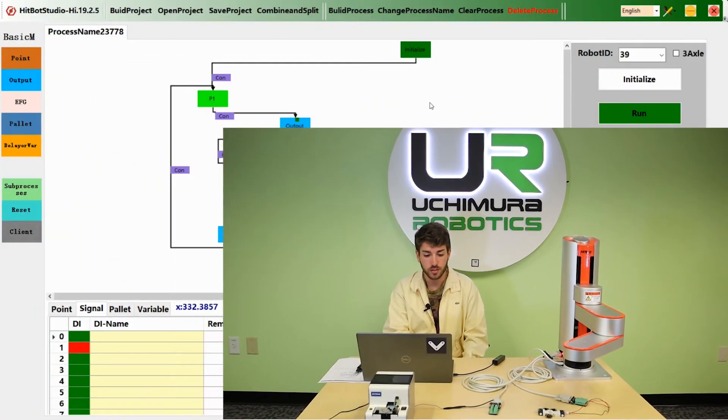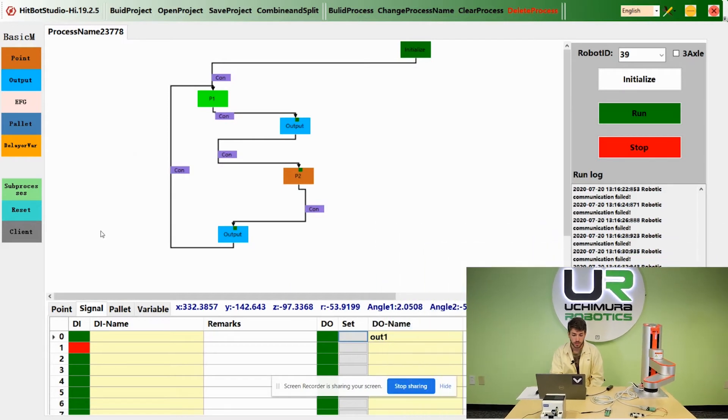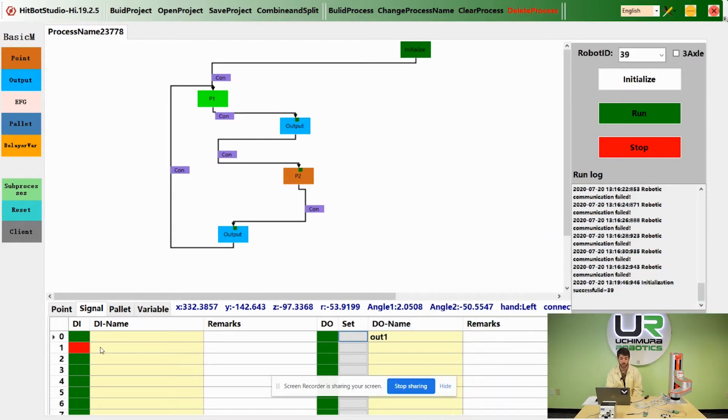So as you can see, input 1 is colored red and that's because a screw is present in the screw feeder. If I turn off the screw feeder, the signal is now green which means it's not reading anything.